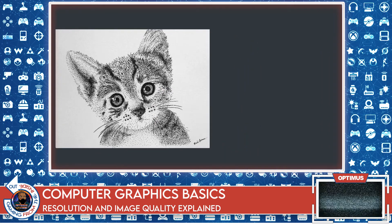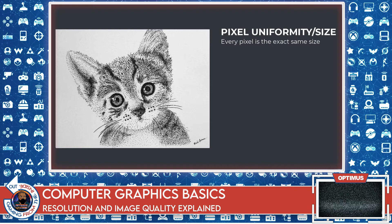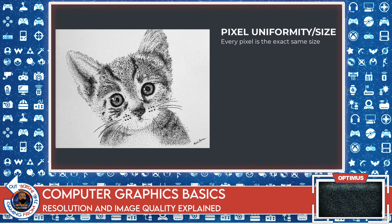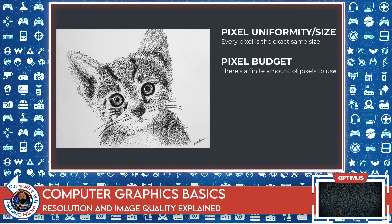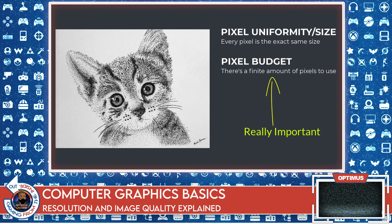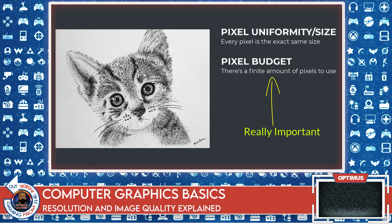That brings us to our first concept: pixel size. It is important to communicate that in this stippling drawing — or just with pixels in general — every pixel is the exact same size. Every dot is the exact same size. There is no such thing as one dot being bigger than another dot. That basically means there's pixel uniformity. The next concept this brings up is the notion of a pixel budget, and this is a big one. Pixel budget is simply the number of pixels that you have — that you're allowed to use to make the image.